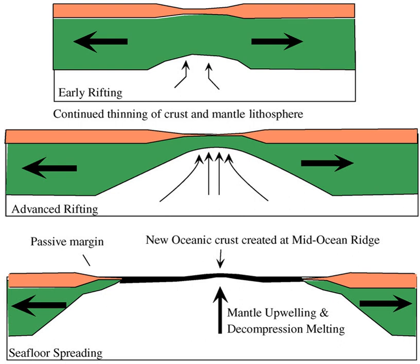Volcanic margins form part of large igneous provinces, which are characterized by massive emplacements of mafic extrusives and intrusive rocks over very short time periods. Volcanic margins form when rifting is accompanied by significant mantle melting, with volcanism occurring before and/or during continental break-up. The transitional crust of volcanic margins is composed of basaltic igneous rocks, including lava flows, sills, dikes, and gabbro.